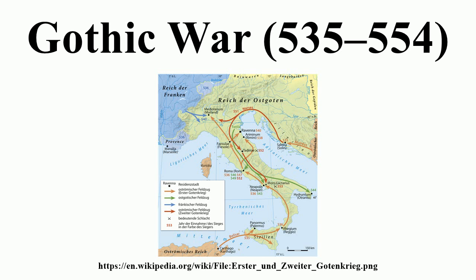From there, Belisarius prepared to cross over into Italy, where Theodahad, fearful because of the Byzantine successes, had sent envoys to Justinian, proposing at first to cede Sicily and recognize his overlordship, but later to cede all of Italy to him. In the meantime, triumph and disaster had befallen the Romans in Dalmatia.